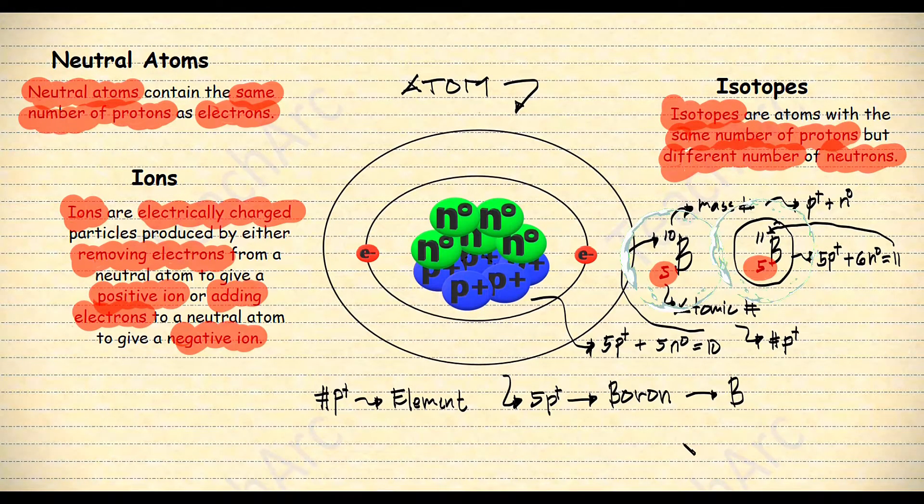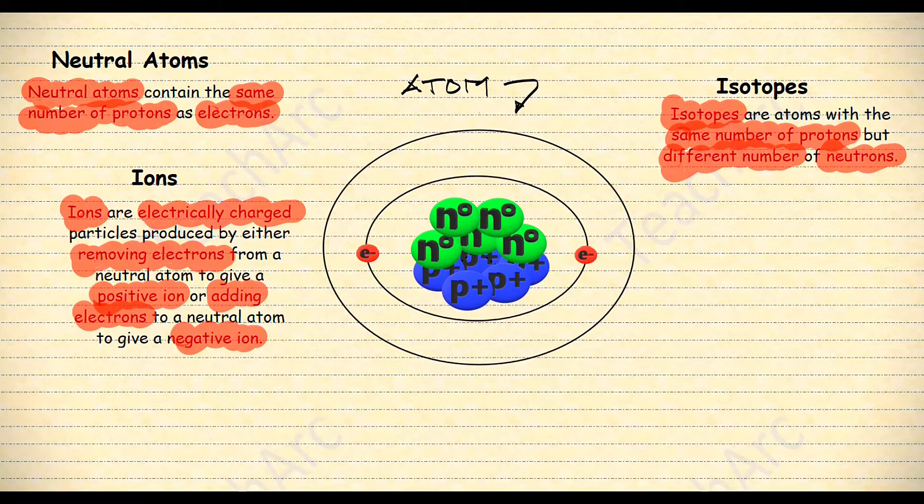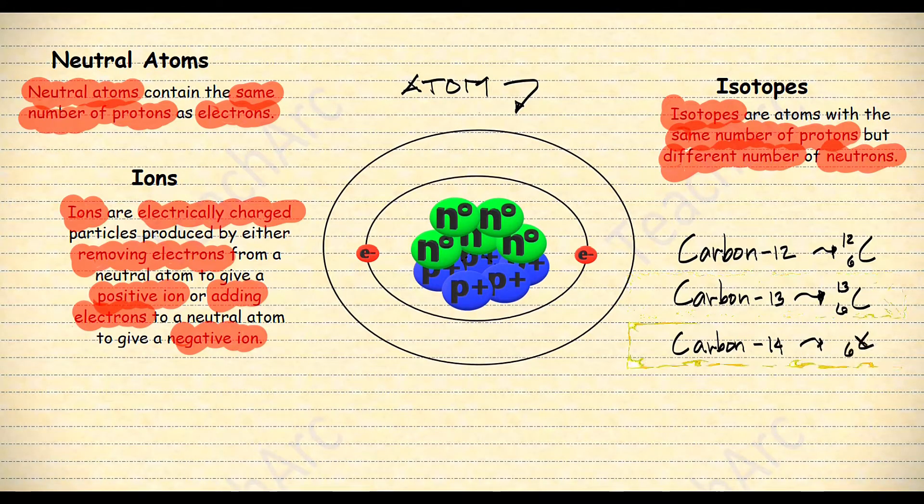These two are called isotopes of boron. We call this one boron-10 and this one boron-11. And yes, all elements that we know have isotopes. Carbon-12, carbon-13, and carbon-14 are isotopes of carbon, for example.